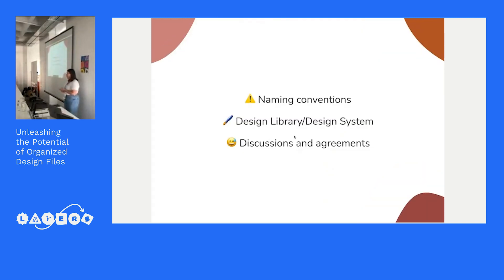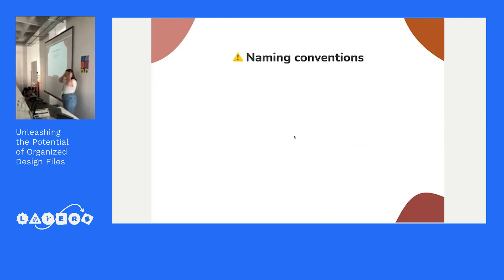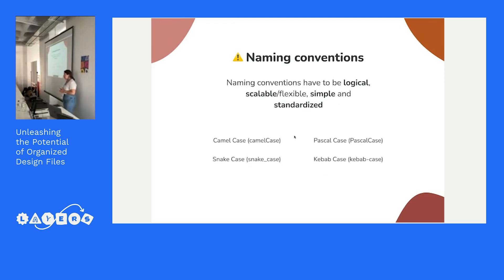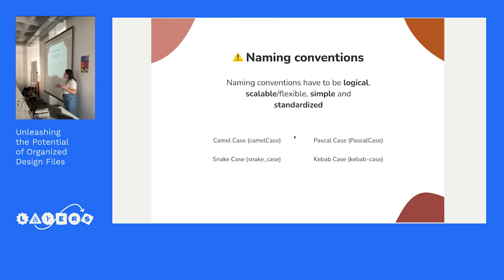I'm going to bring three topics that are important to tackle before talking about real standardization. The first one is naming conventions. Naming conventions can feel boring, but they need to be logical, scalable, flexible, simple, and standardized. I brought three ideas you can use — normally these conventions are used in development and we can borrow from that. You can use naming conventions for folders, files, and layers, especially components and properties.